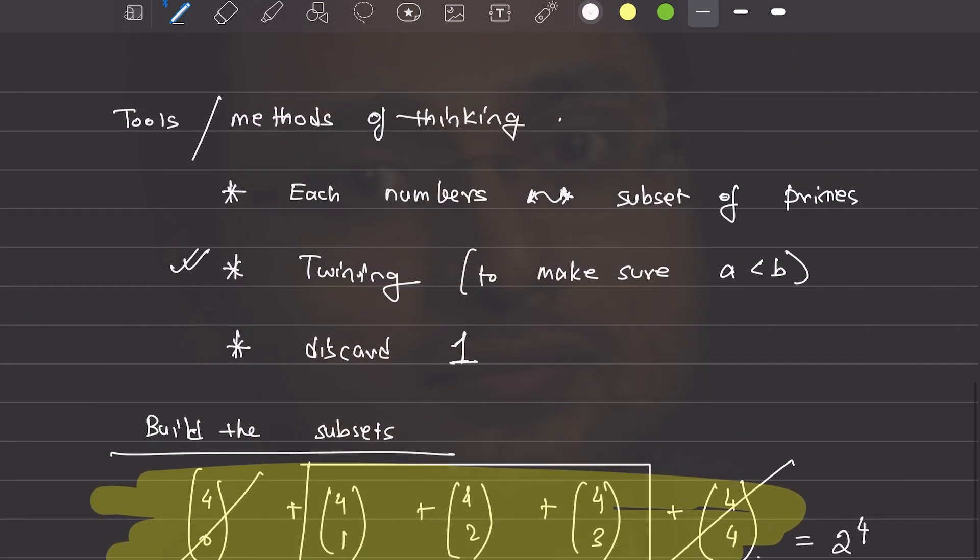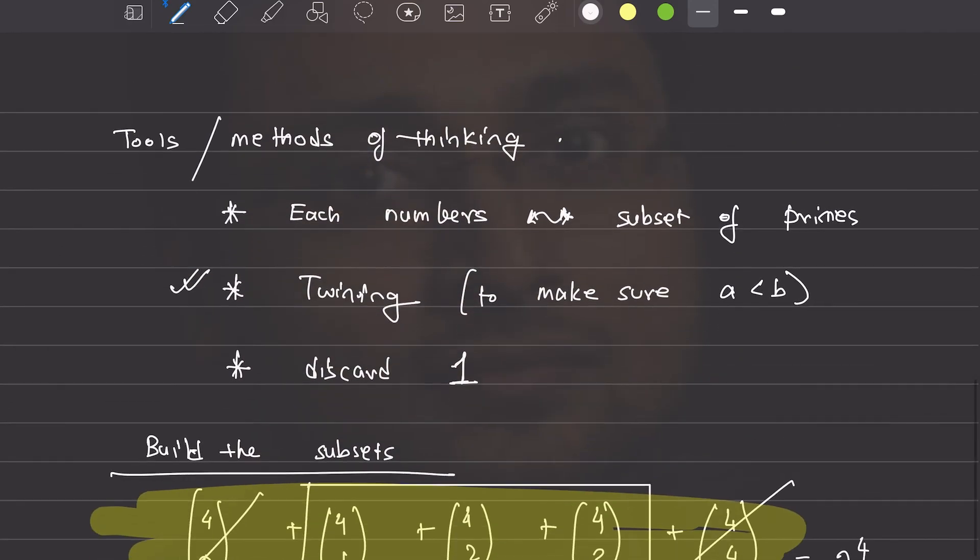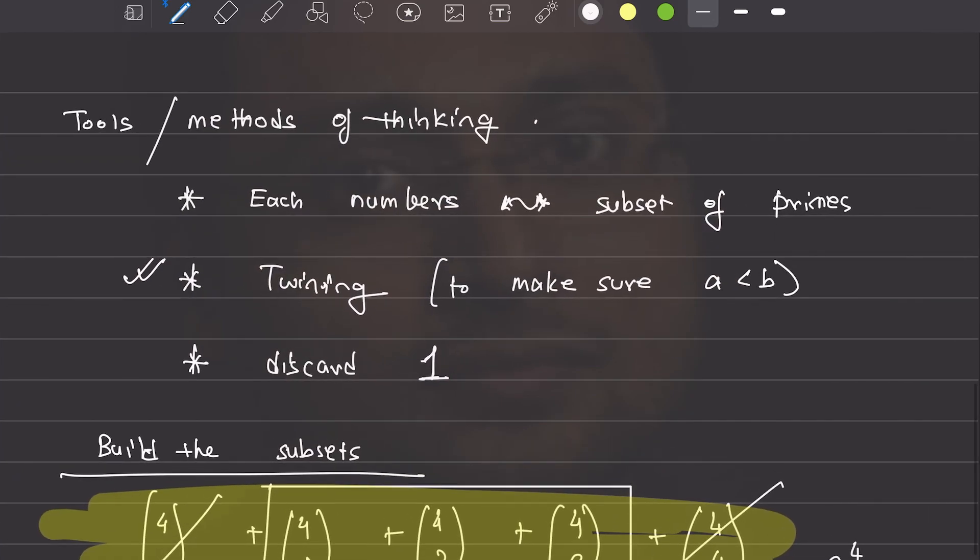And do you remember any problem, any other problem where you have used these three methods? Thinking of numbers as subsets of primes, twinning, and discarding some of the cases which you don't want. You can put that in the chat as well.